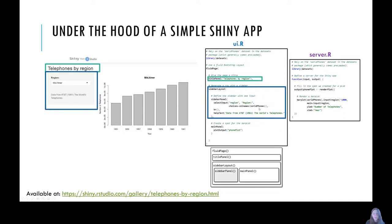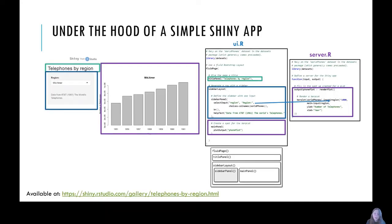The choices for this dropdown list come from the column names of the dataset 'world phones', which is already loaded in RStudio and comes from the datasets package. There's also some help text written to describe to the user where the data comes from. On the right hand side we have the plot output, which is the bar plot showing the number of telephones, and this relates to the server.R code. What's happening here is this is outputting the phone plot, corresponding to the same name in the server code.